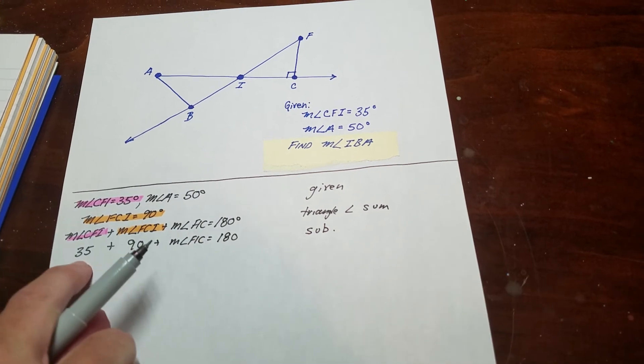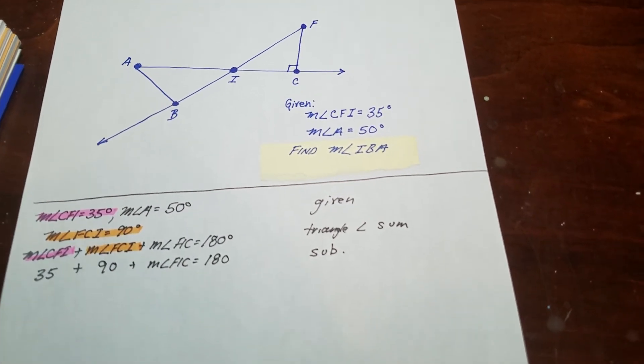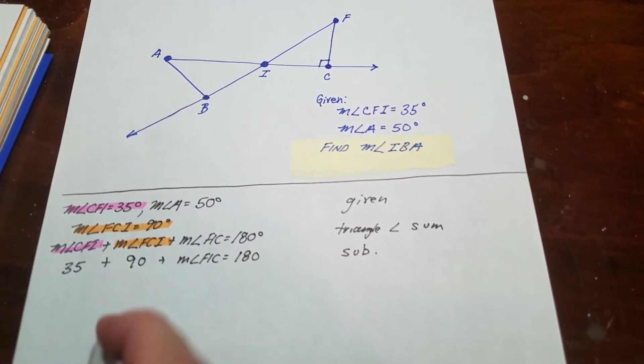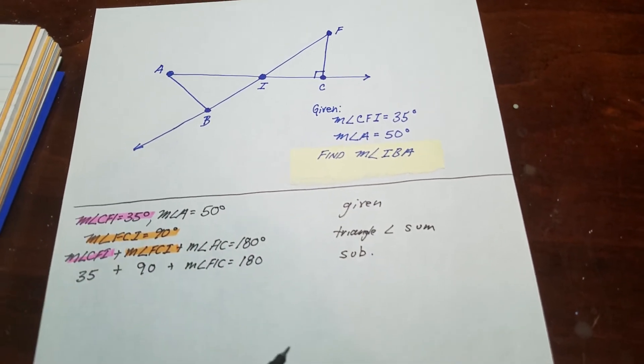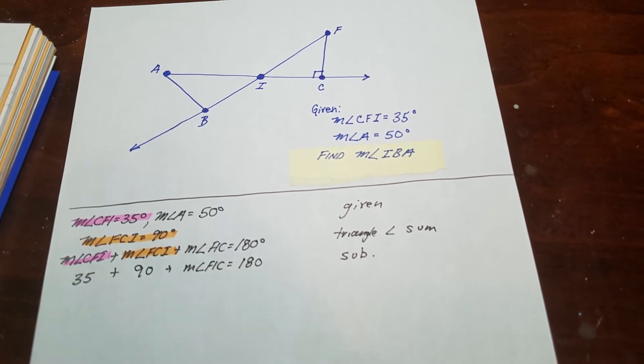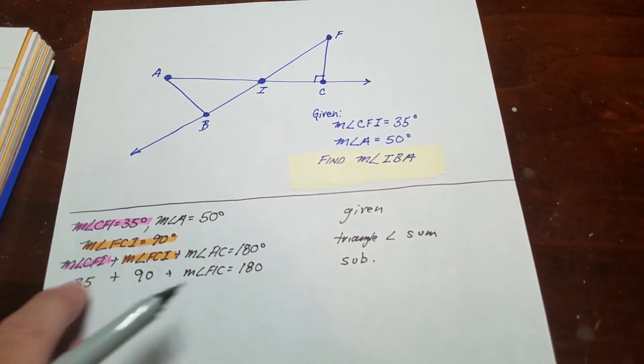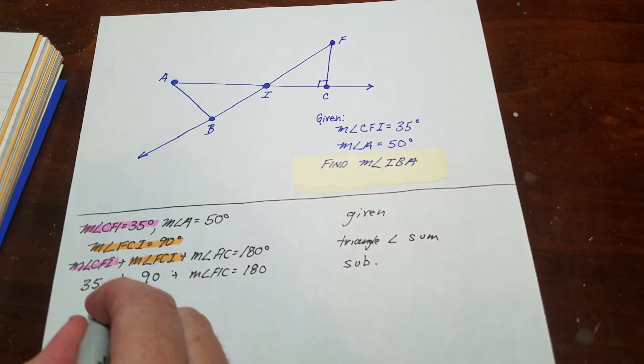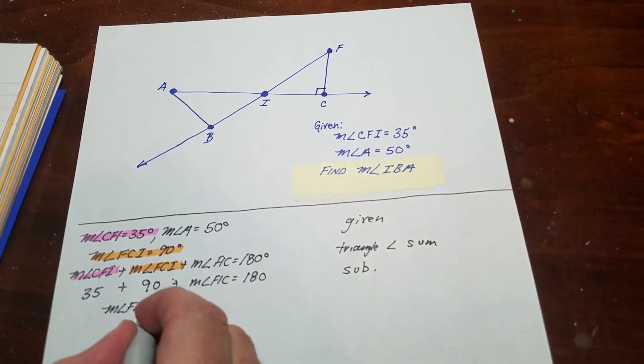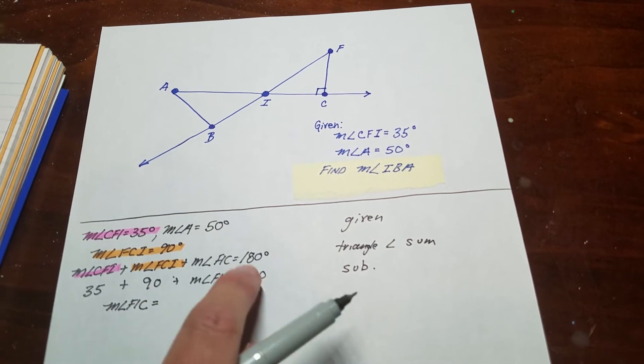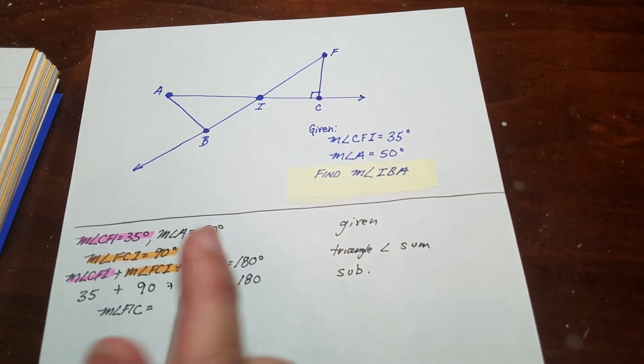These two angles add up to 125. You could do the steps where you add them up then use additive inverse like in algebra, but in geometry you can just subtract both at the same time. That's what I'm going to do.